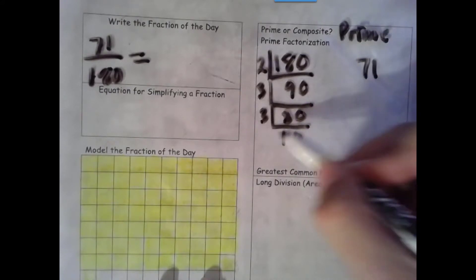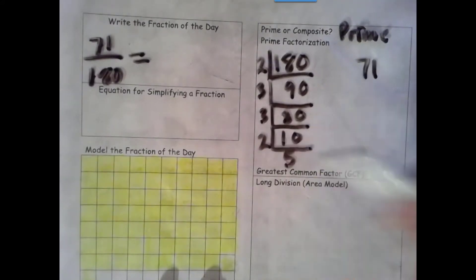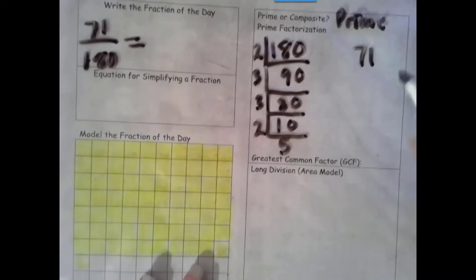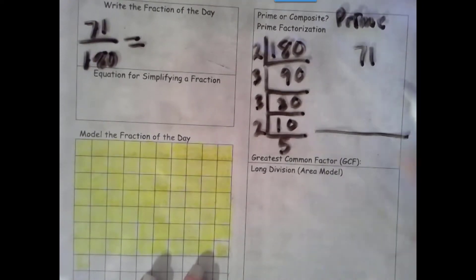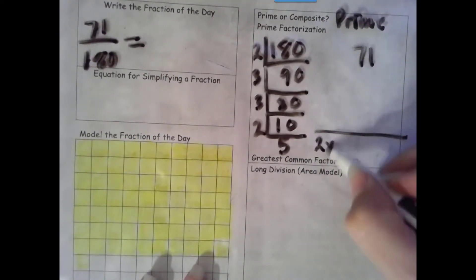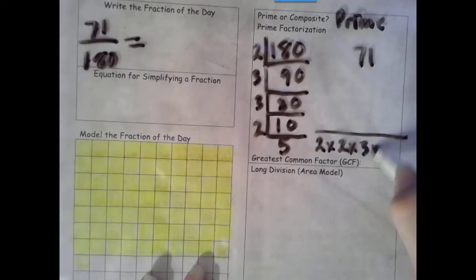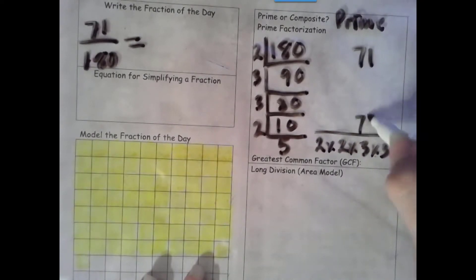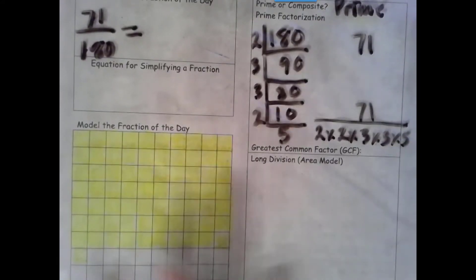So let's get down our prime factorization for our denominator: 2 times 2 times 3 times 3 times 5. And our numerator, it's the only prime number I can divide by.